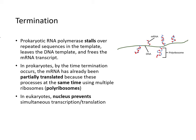Termination of transcription: in prokaryotes, RNA polymerase stalls over repeated sequences in the template, then leaves the DNA template and frees the messenger RNA transcript. In prokaryotes, transcription and translation occur simultaneously — multiple ribosomes attach to the nascent messenger RNA and translate the protein as it is produced. By the time termination occurs, the messenger RNA has already been partially translated.